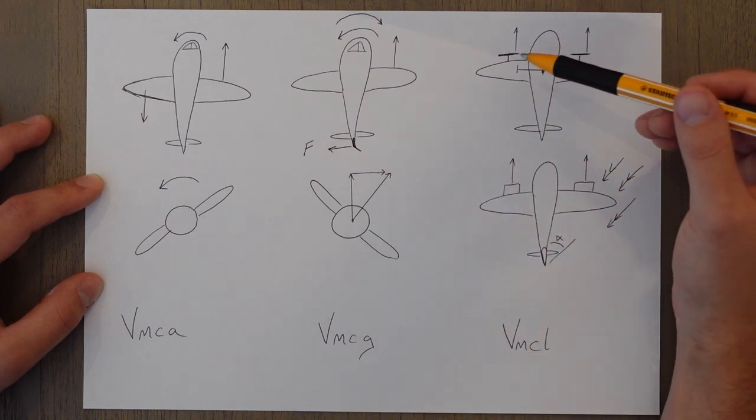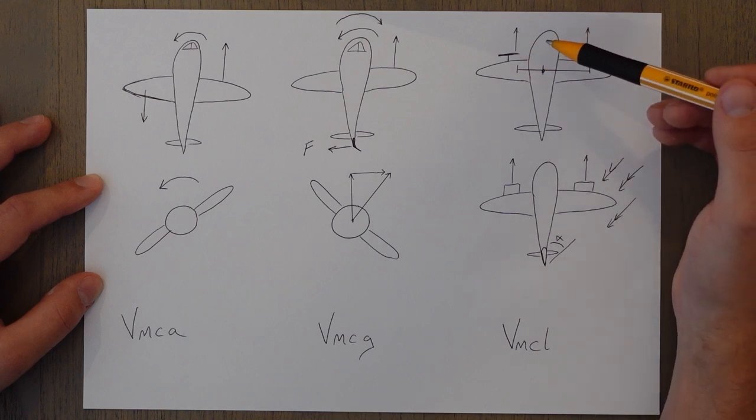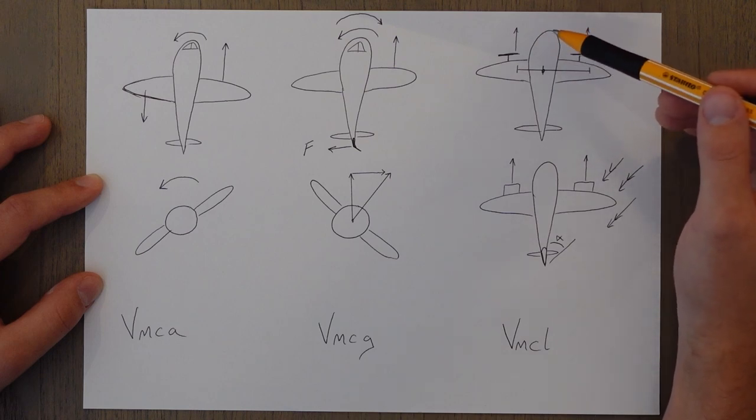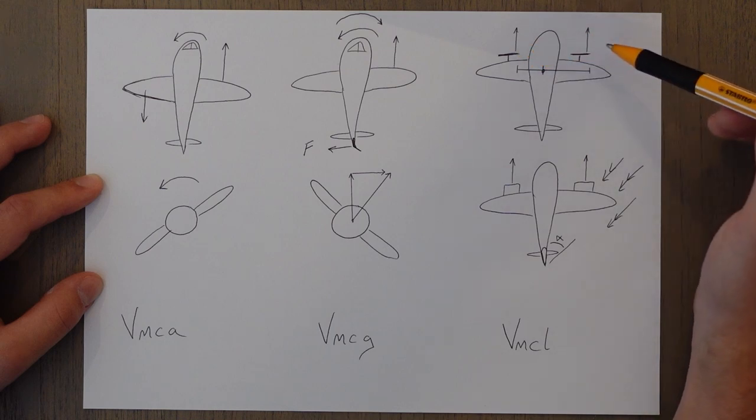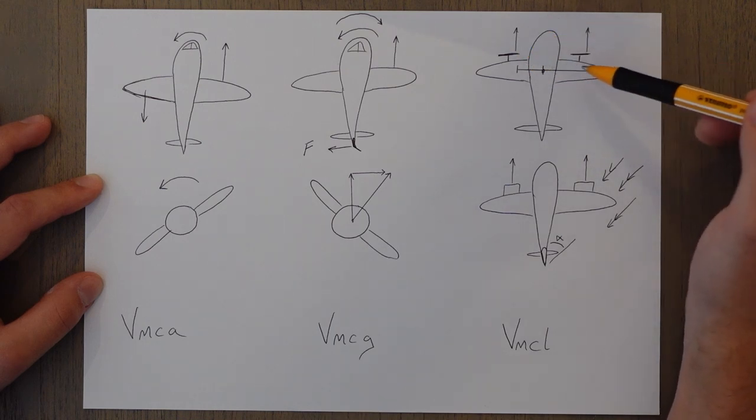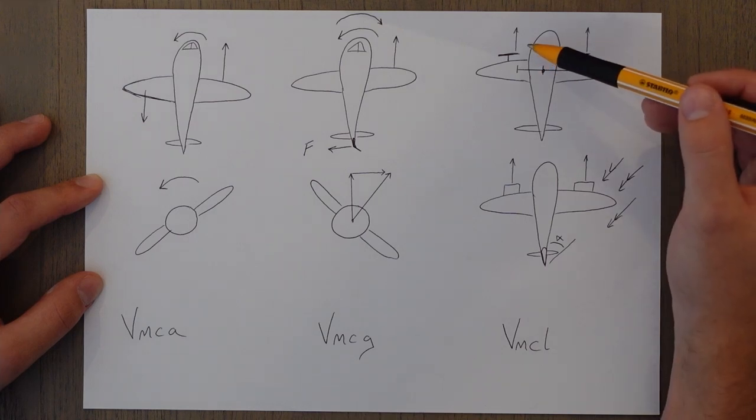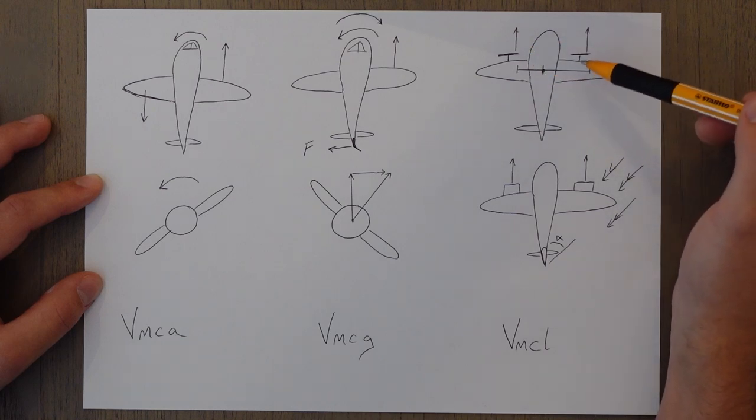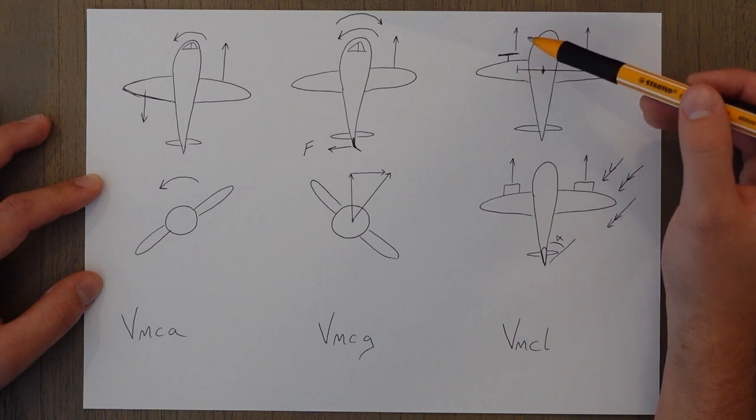The critical engine on a twin propeller aircraft is the left engine. That's with right hand or clockwise rotating propellers. Because of the asymmetric blade effect or the P factor, it means that the distribution of thrust is off to the right of the propellers. And because of this, the balance arm for the right hand engine is longer and the balance arm for the left is shorter. So if this engine was to fail, you've got a much stronger moment because you've got a longer distance times force than if this were to fail because you've only got this small distance times this force.